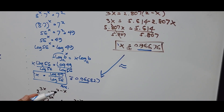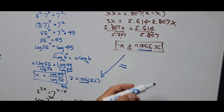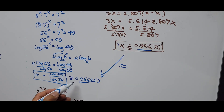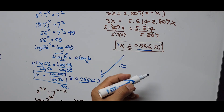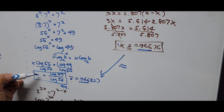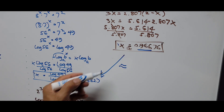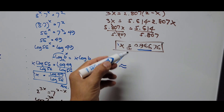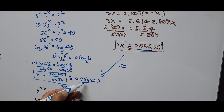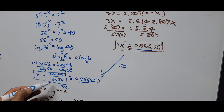The discrepancy in the decimal values of x is attributed to rounding of numbers. The exact answer is log of 49 divided by log of 56. The Method 2 approximate value is close to this, but the exact form from Method 1 is more precise.